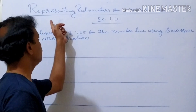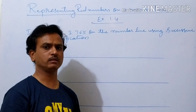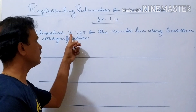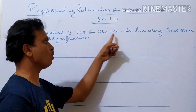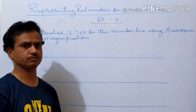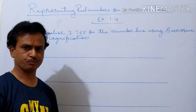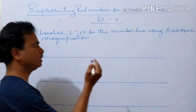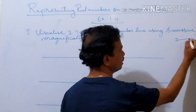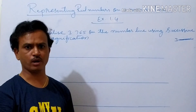Next point: you are representing real numbers on a number line. Exercise 1.4 — visualize 3.765 on the number line using successive magnification. So what is the first digit here? 3 is there. From 3 to 4, in between 3 to 4, how many parts are there? There are 10 parts.